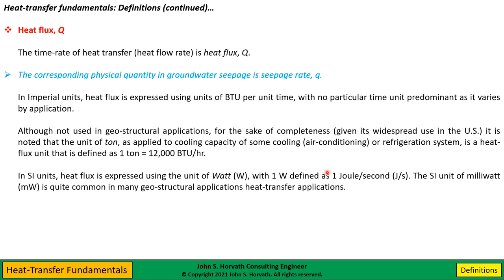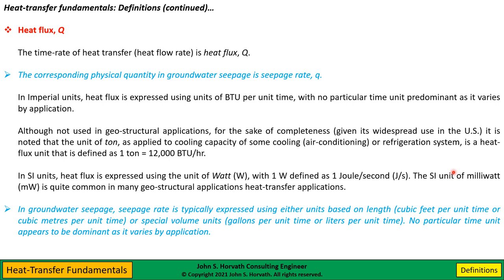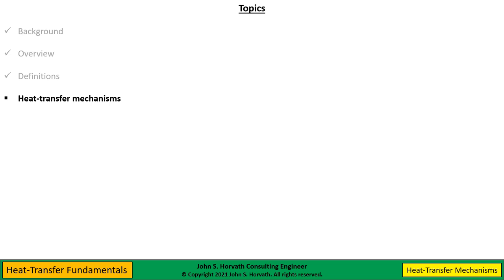In SI units, heat flux is expressed using watts, where one watt is defined as one joule per second. You'll see the SI unit of milliwatt very commonly used in heat flux problems — for example, the geothermal heat flux was expressed in milliwatts. In groundwater seepage, seepage rate is typically expressed using length-based units like cubic feet per unit time or cubic meters per unit time, or using volume units like gallons per unit time or liters per unit time. There's no particular time unit that predominates in groundwater flow either — it varies by application.